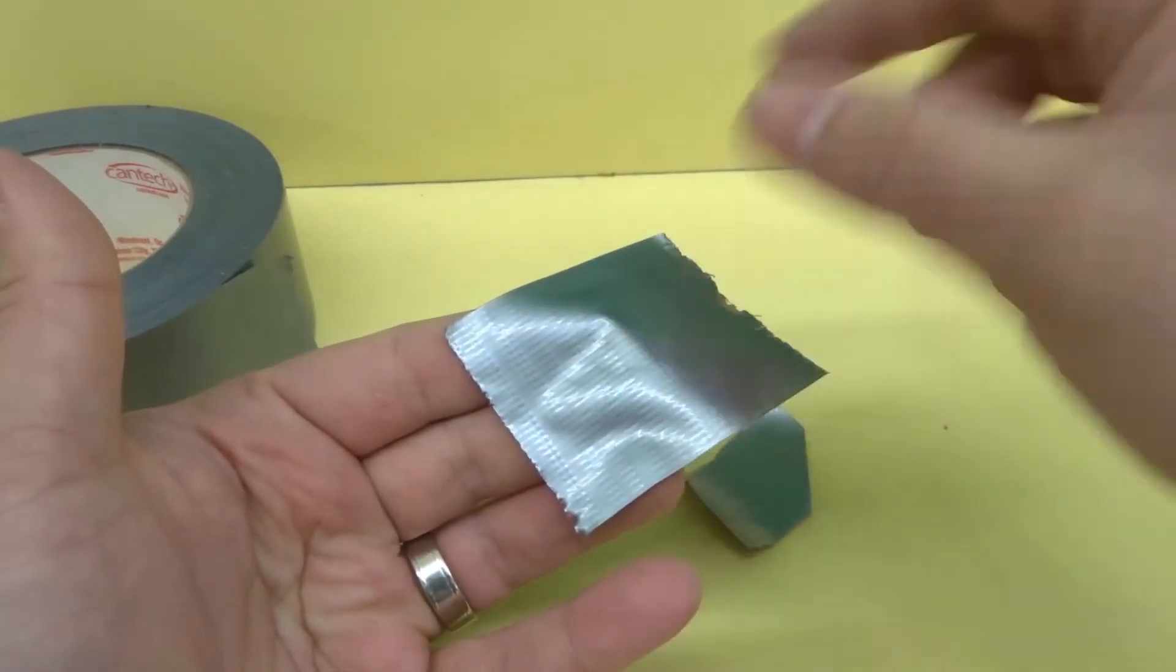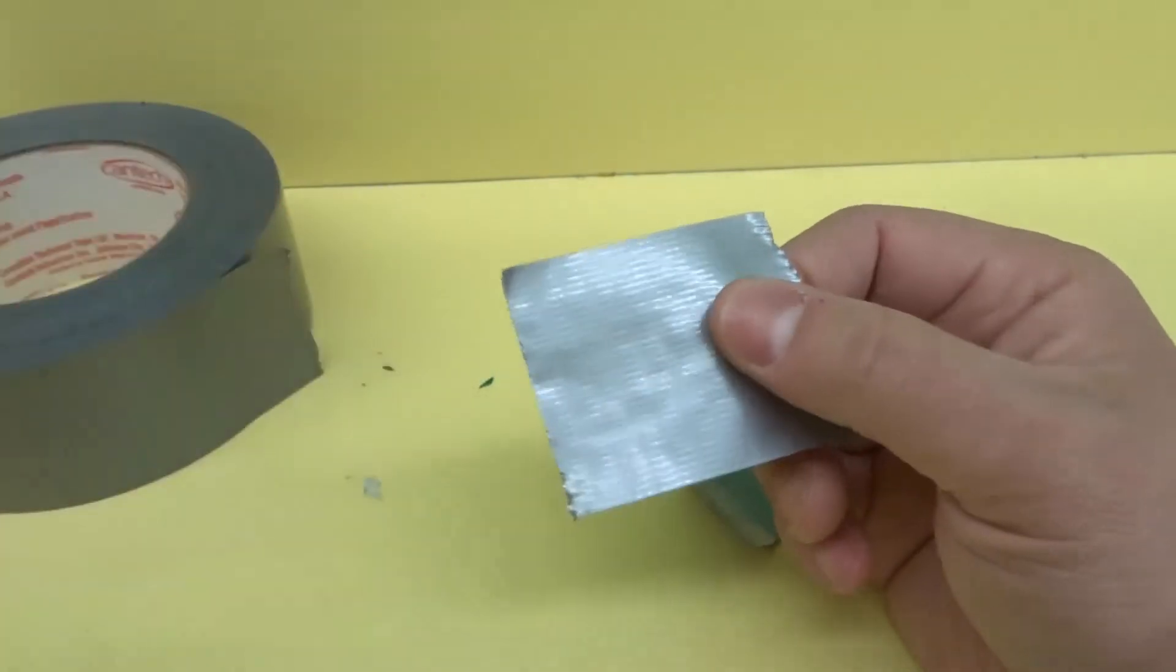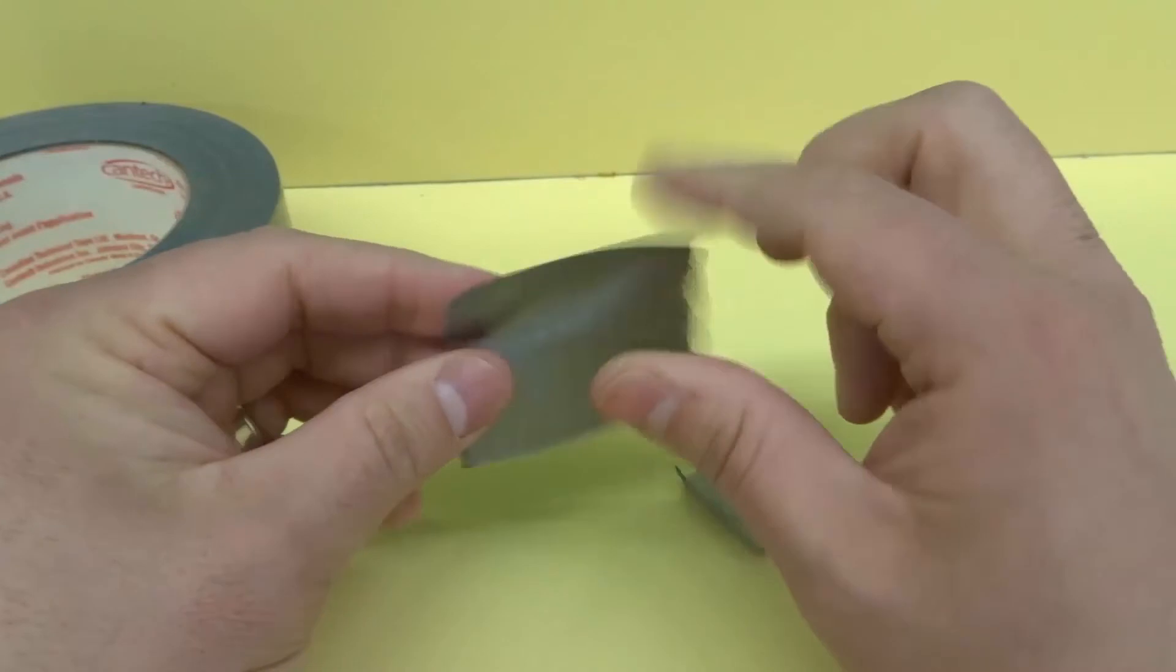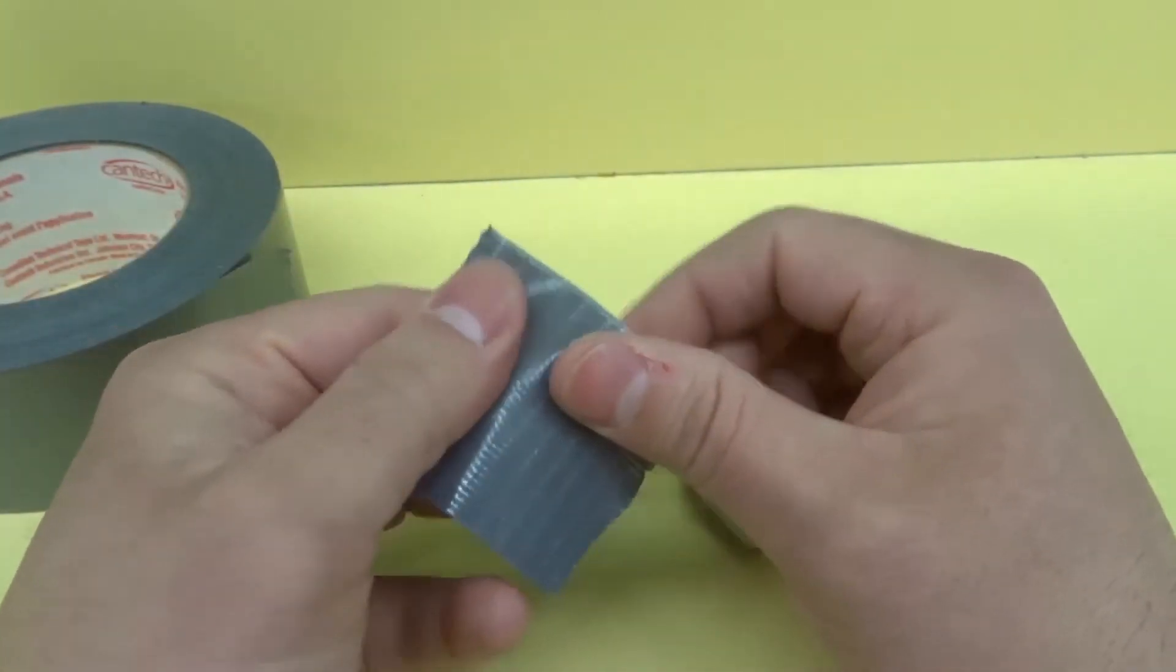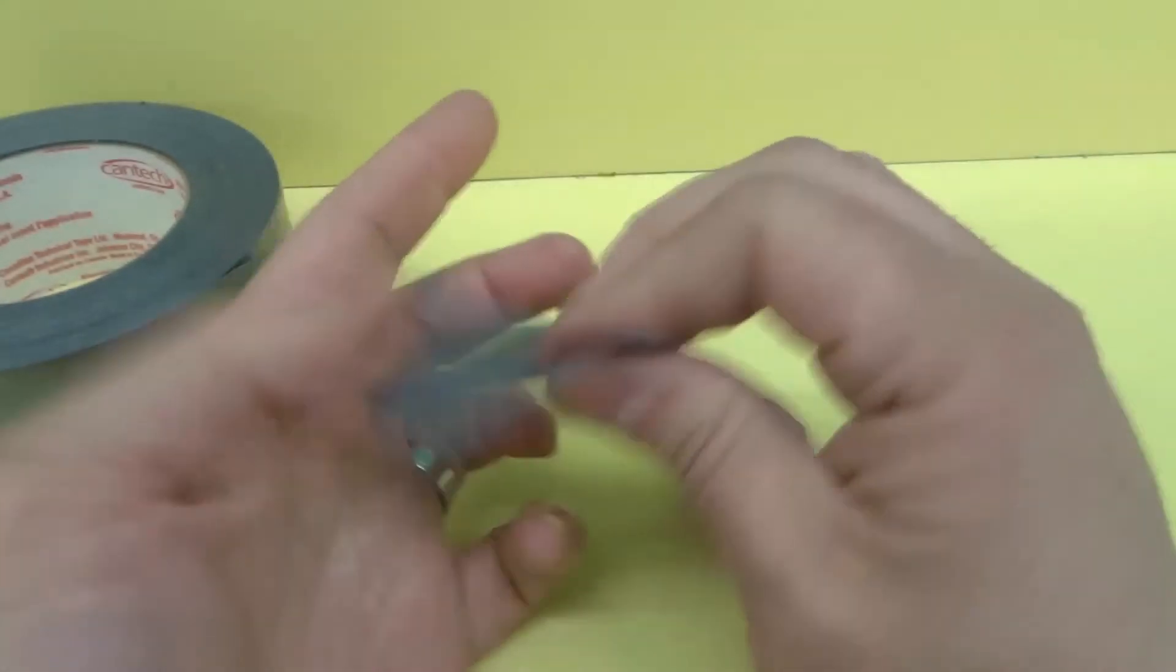So because it doesn't absorb the water that allows the mesh material, the cloth-like material, to be super strong. It allows the adhesive to stay stronger for longer because it's not getting wet. So you can see I've been touching this for so long and look at this, it's still quite sticky.